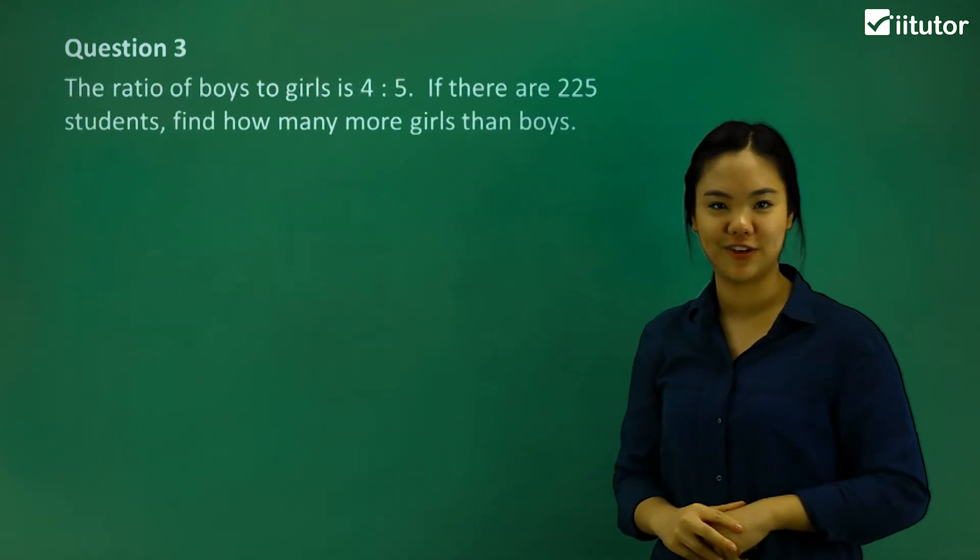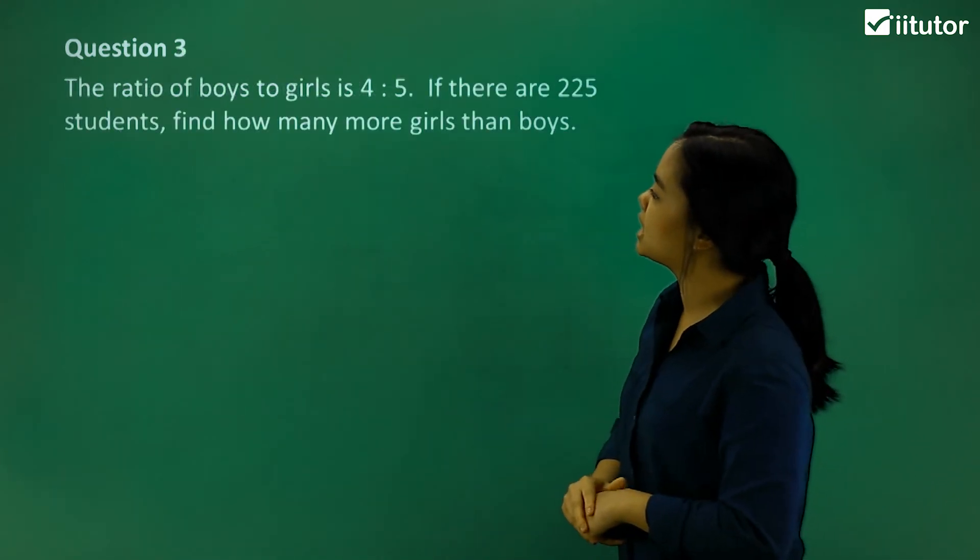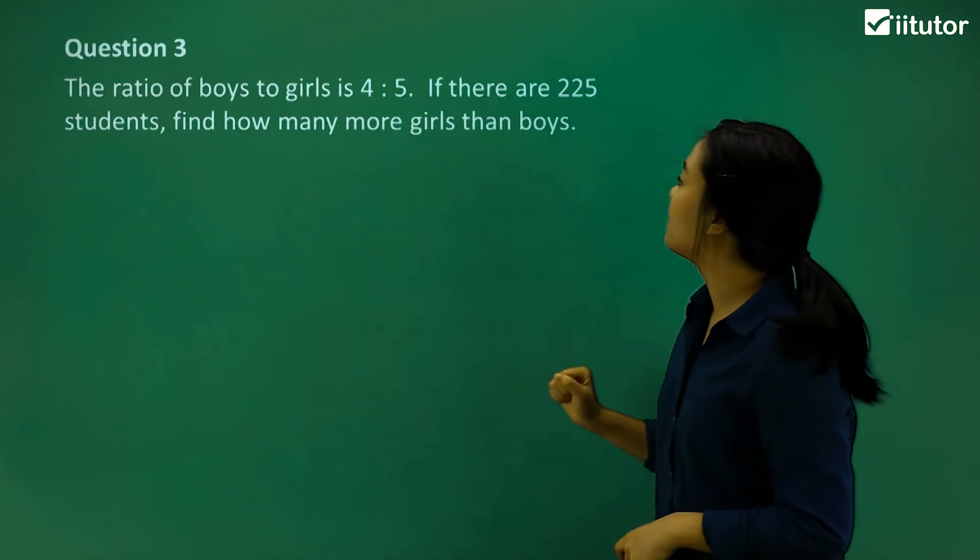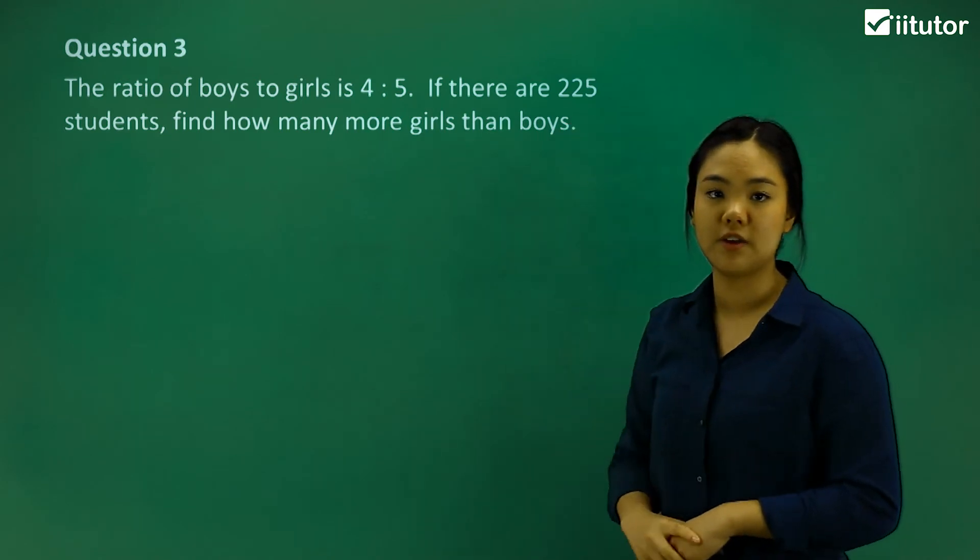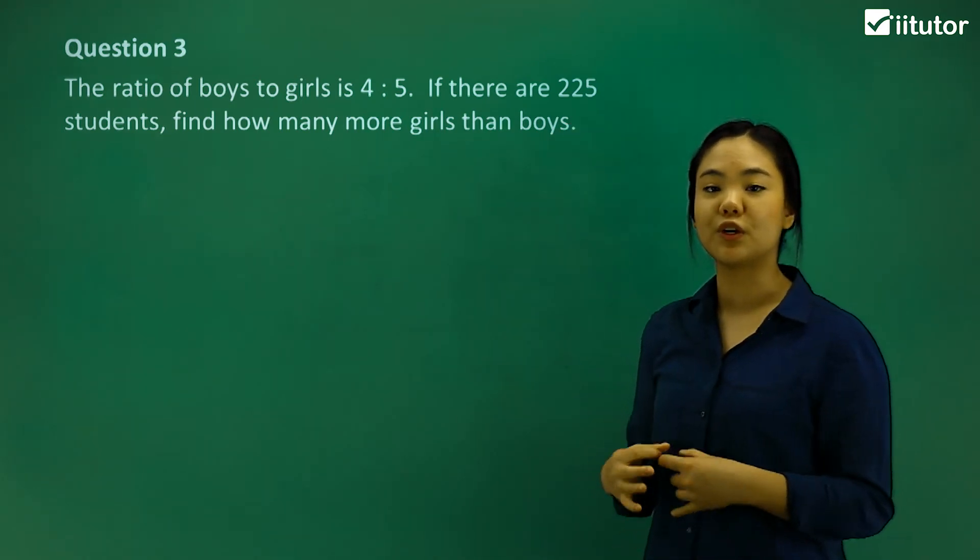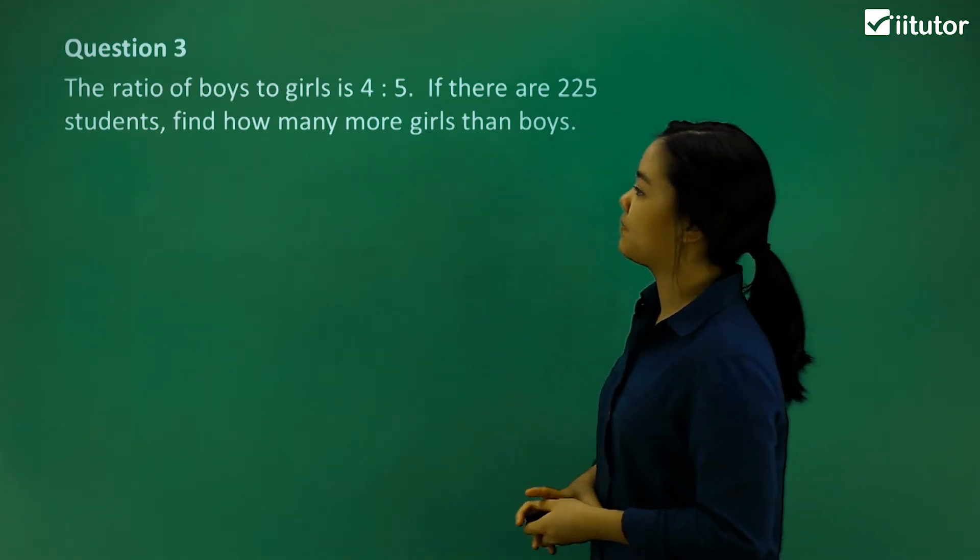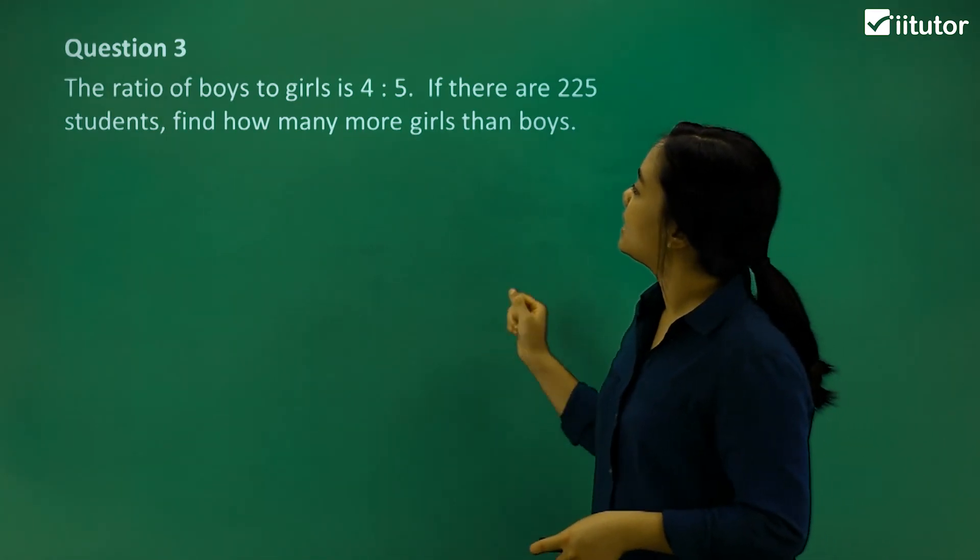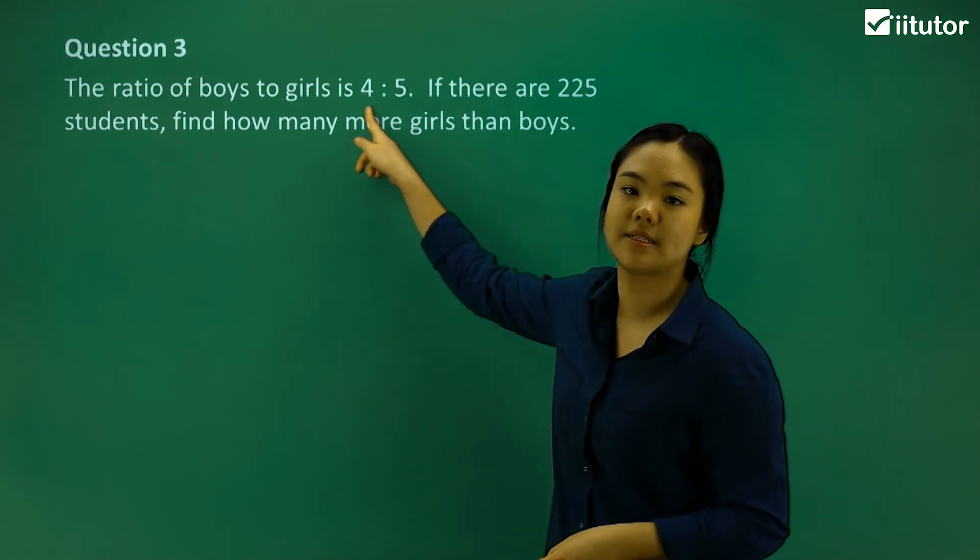Okay, let's do question three. So it says the ratio of boys to girls is 4 to 5. If there are 225 students, how many more girls than boys? Okay, so what we can start off is finding out how many boys.